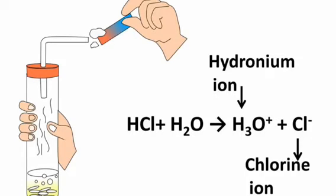HCl plus H2O will give you H3O+ plus Cl- ion. H3O+ is known as hydronium ion and Cl- is chloride ion. That is, hydronium ion and chloride ions are formed here.